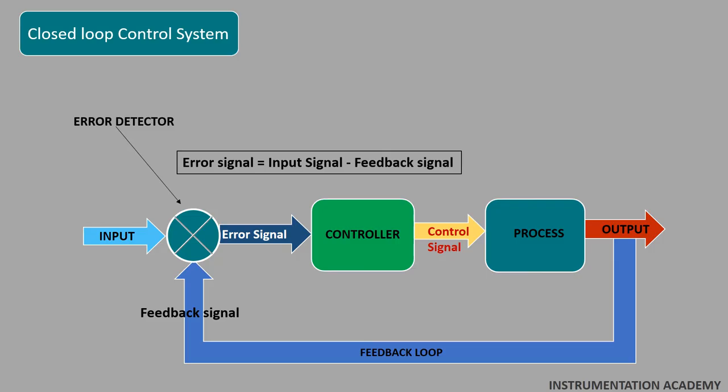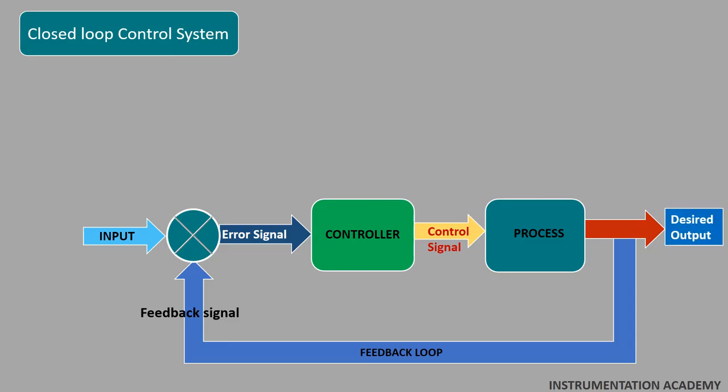By this way, the output of the control system is adjusted automatically till we get the desired output. Hence closed loop control systems are also called automatic control systems or feedback control systems.